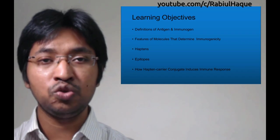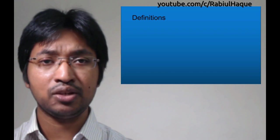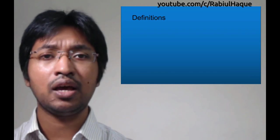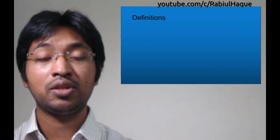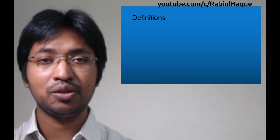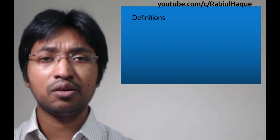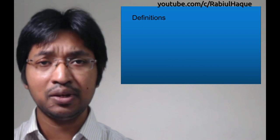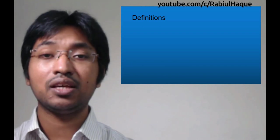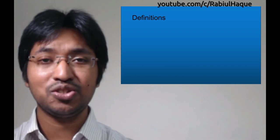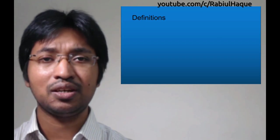We will start with definitions. The first definition we will talk about is antigen, and then we will talk about the definition of immunogen. My students often become very confused when studying the definitions of antigen and immunogen, so let's try to clarify these two definitions now.